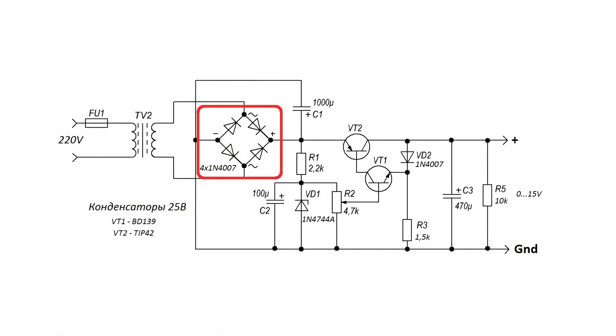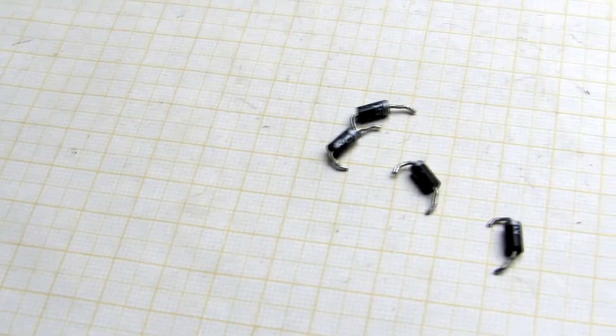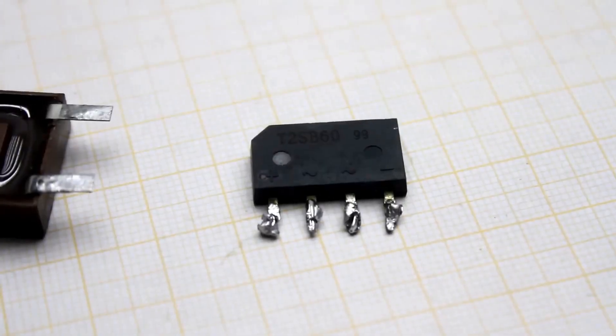The diode rectifier is made from any four diodes rated for 1 amp. You can use ready-made diode rectifiers.